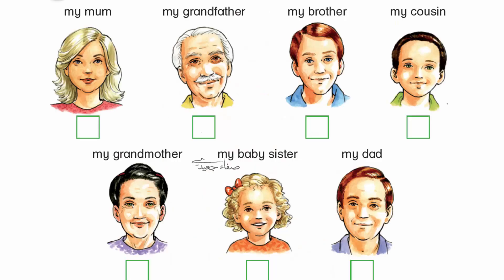Listen and say. He has brown hair and green eyes. It's my cousin. He has red hair and blue eyes. It's my brother. He has white hair and brown eyes. It's my grandfather. He has red hair and brown eyes. It's my dad.